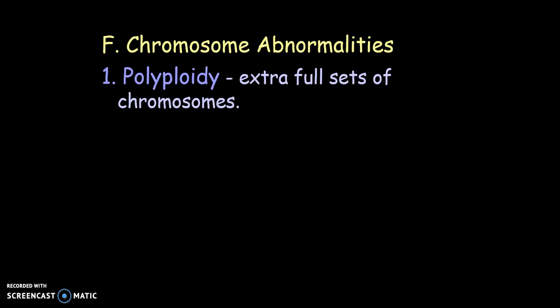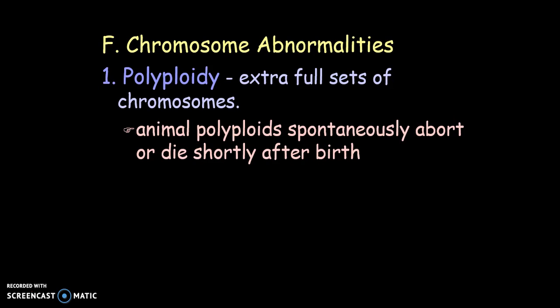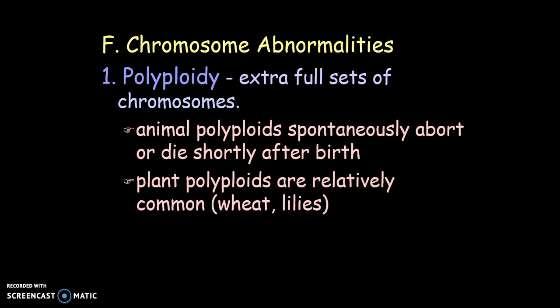There are some chromosome abnormalities to discuss. Polyploidy is when an organism has an extra full set of chromosomes. In animals, the fetus will typically spontaneously abort because it's not viable, but polyploidy is very common in plants. Plants can be triploid (3N), meaning three copies of each chromosome, or tetraploid (4N). Polyploidy can result from an error in meiosis where chromosomes don't separate as normal. Many of the fruits we eat are polyploid.